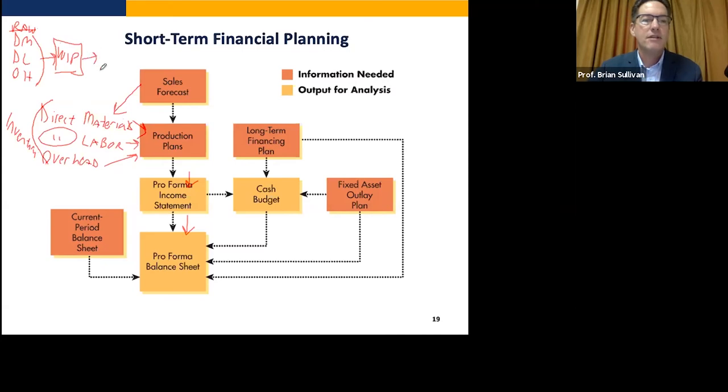And after it's done, it becomes finished goods. This is finished goods. It's not sold, but it's finished. And then from there, it moves into cost of goods sold.